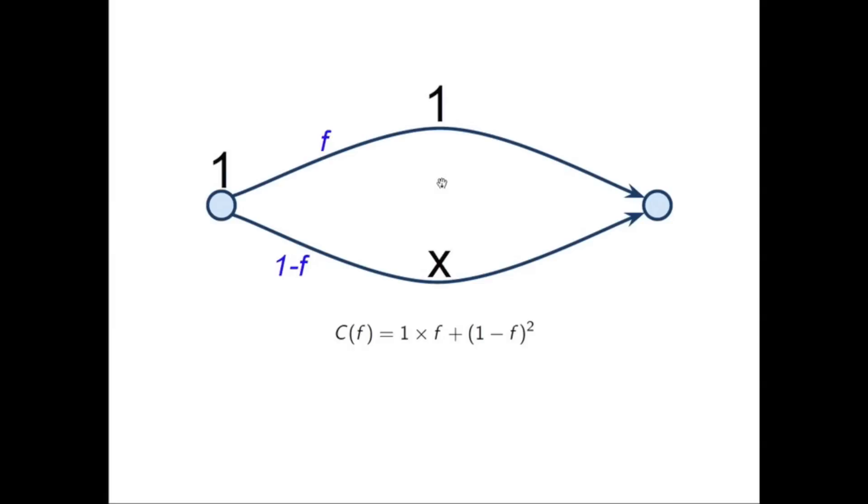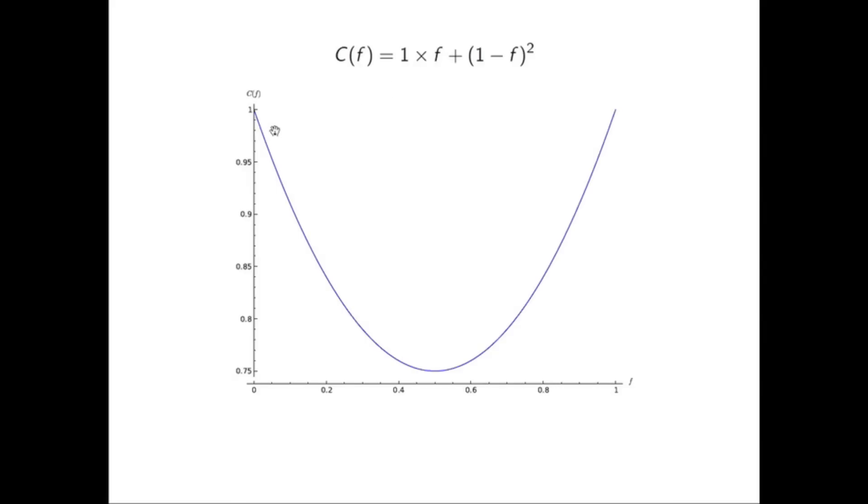So, a simple question is, if we have this situation, what is the best way for the flow to go? Well, you can do this very easily. You can just differentiate this function, find where the derivative is nil, etc. But just looking at it graphically, you should be able to see that the minimum is actually at 0.5. It's not a hard thing to show.